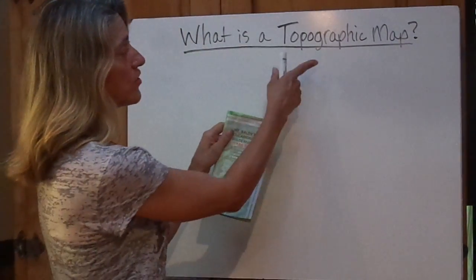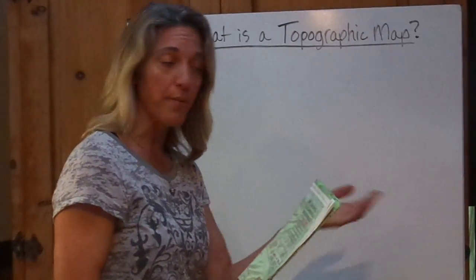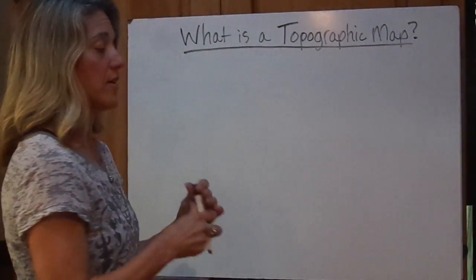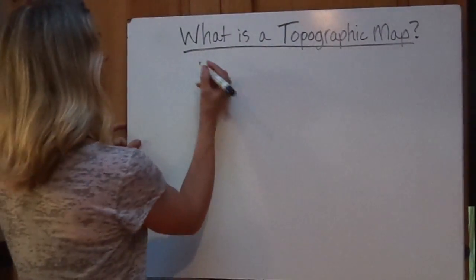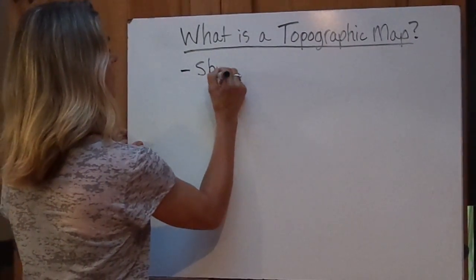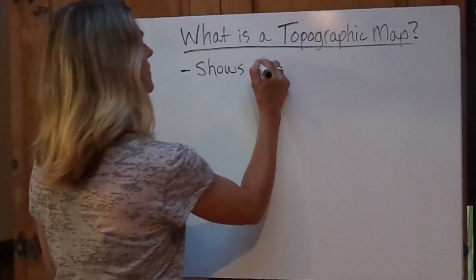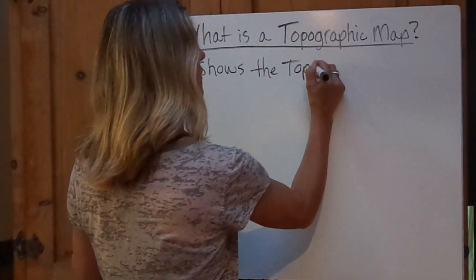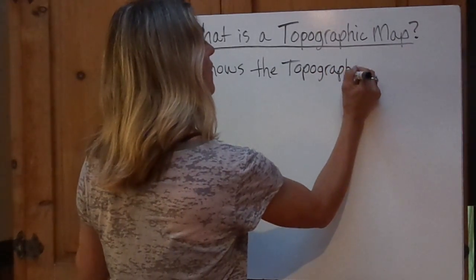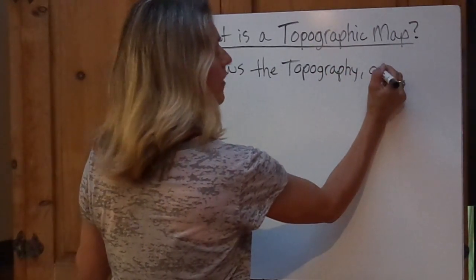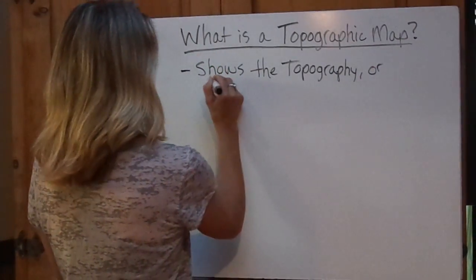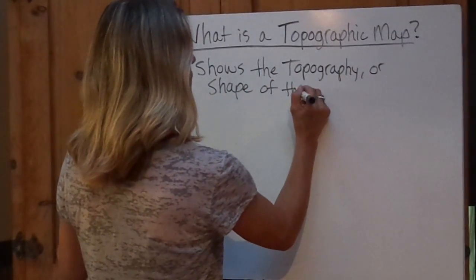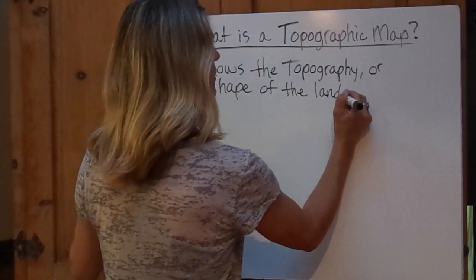So we're going to learn about these. Topographic — this was one of your vocabulary words, topography. The name comes from the shape of the land. A topographic map shows the topography, also known as the shape of the land.